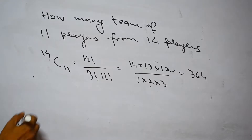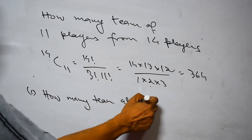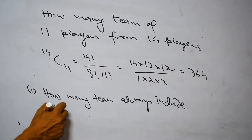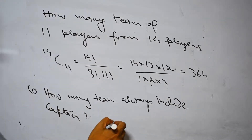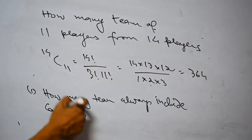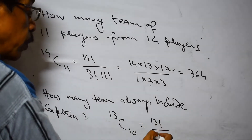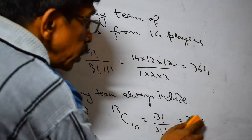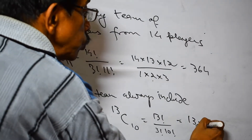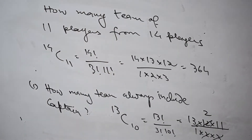Now, how many of these teams always include the captain? Since the captain is already placed in the team, we only need to select 10 more players from the remaining 13. So the result is 13C10, which equals 13 factorial divided by 3 factorial times 10 factorial. That is 13 times 12 times 11 divided by 6, giving 286 ways of selecting a team where the captain is always present.